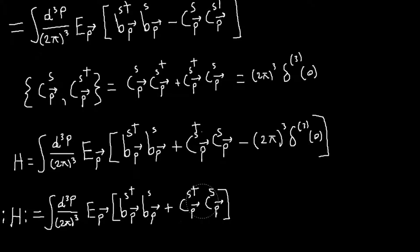So notice that when we were dealing with the creation and annihilation operators of our scalar fields. In our scalar fields, normal ordering amounted to basically the operators commuted under normal ordering.